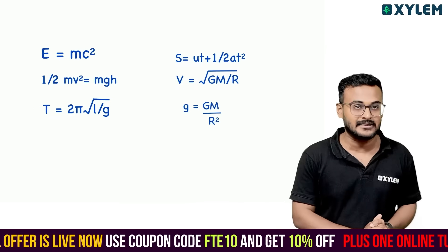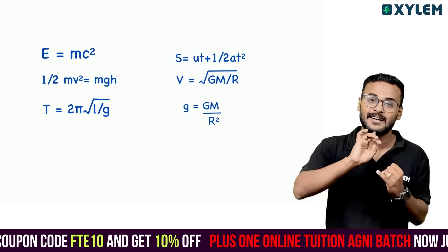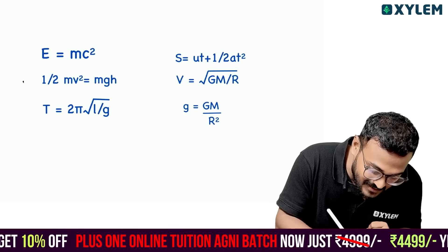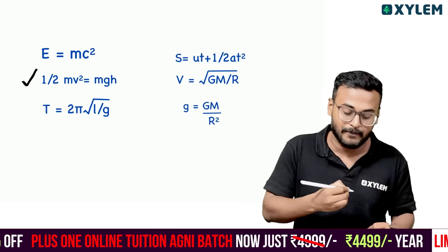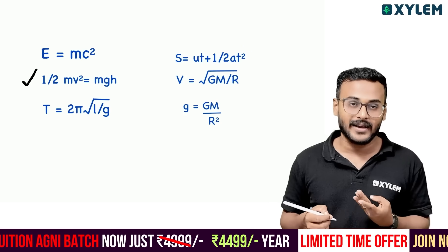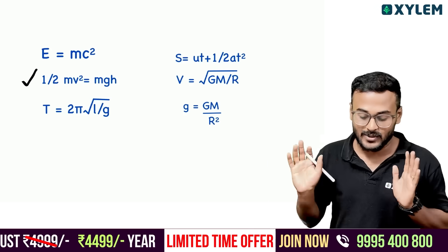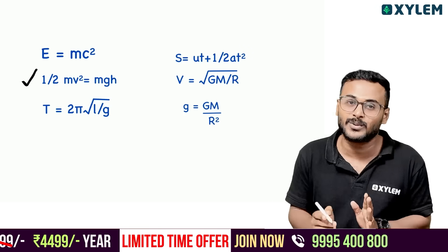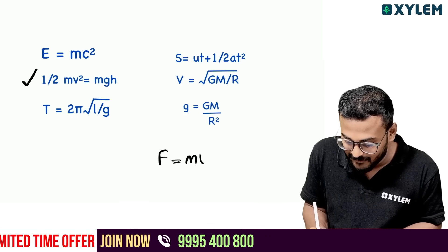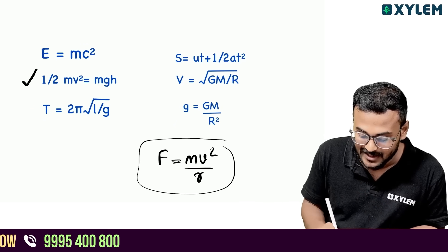This is to talk about checking equations. The equations are: E equal to mc square, half mv square equal to mgh. Then s equal to ut plus half at square, v equal to root of gm by r, g equal to gm by r square, F equal to mv square by r.